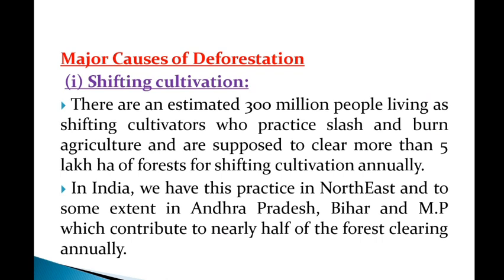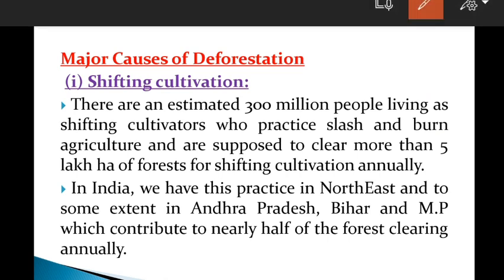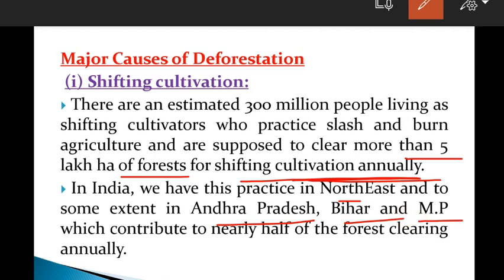The first cause is shifting cultivation. There are an estimated 300 million people living as shifting cultivators who practice slash and burn agriculture, and are supposed to clear more than 5 lakh hectares of forest for shifting cultivation annually. In India, the northeast and some extent Andhra Pradesh, Bihar, and Madhya Pradesh contribute nearly half of the forest cleared annually. This is one of the major causes of deforestation.